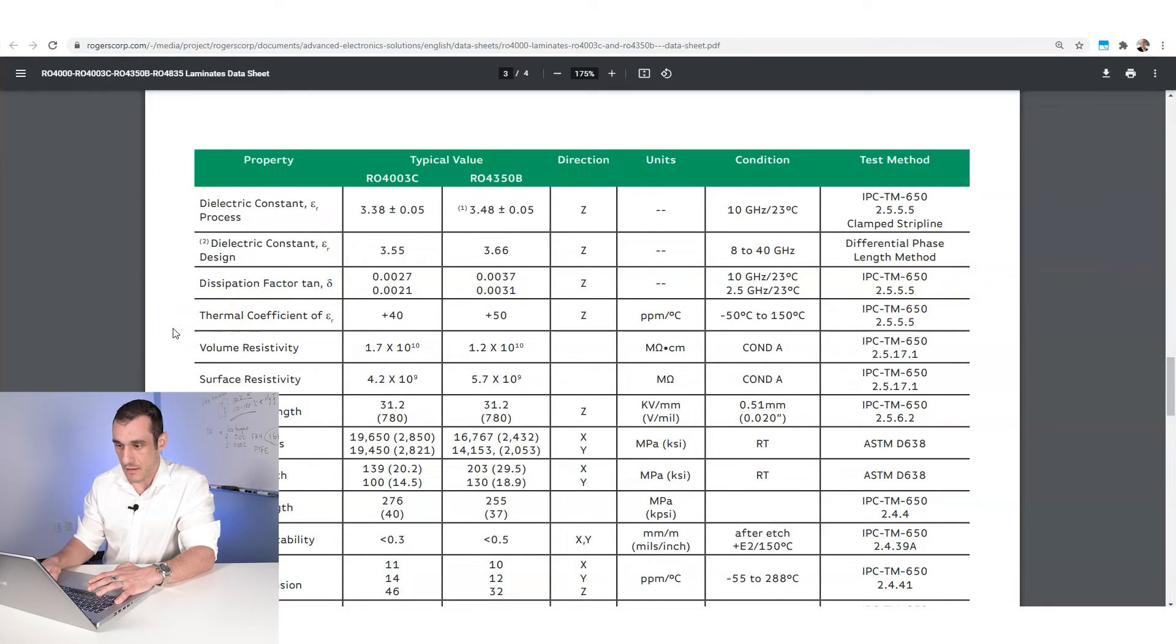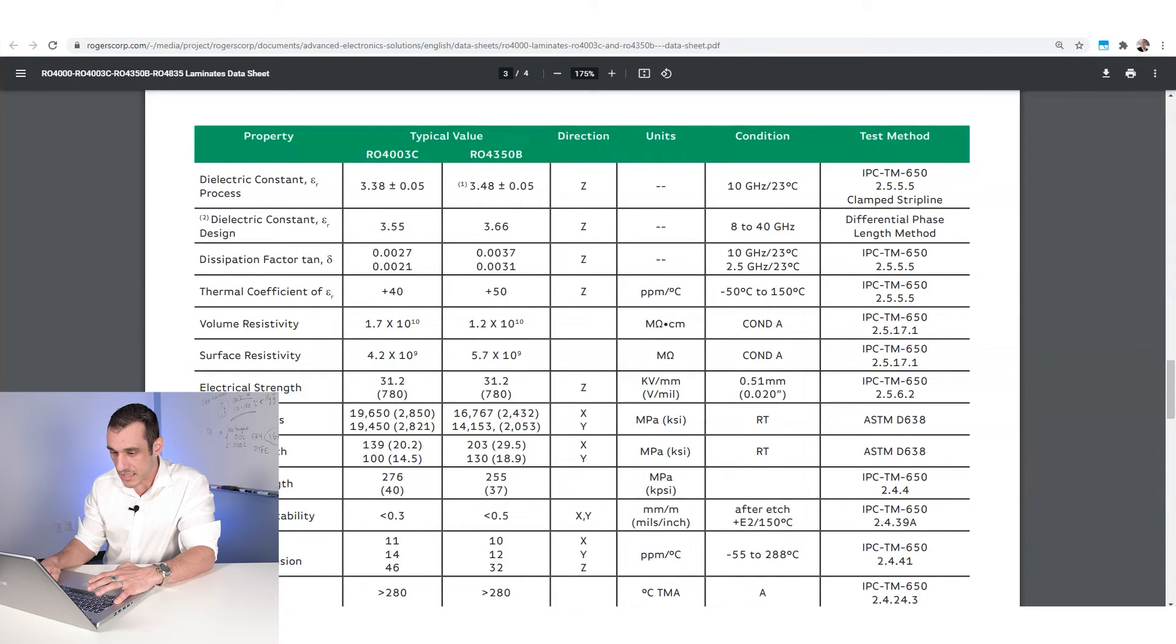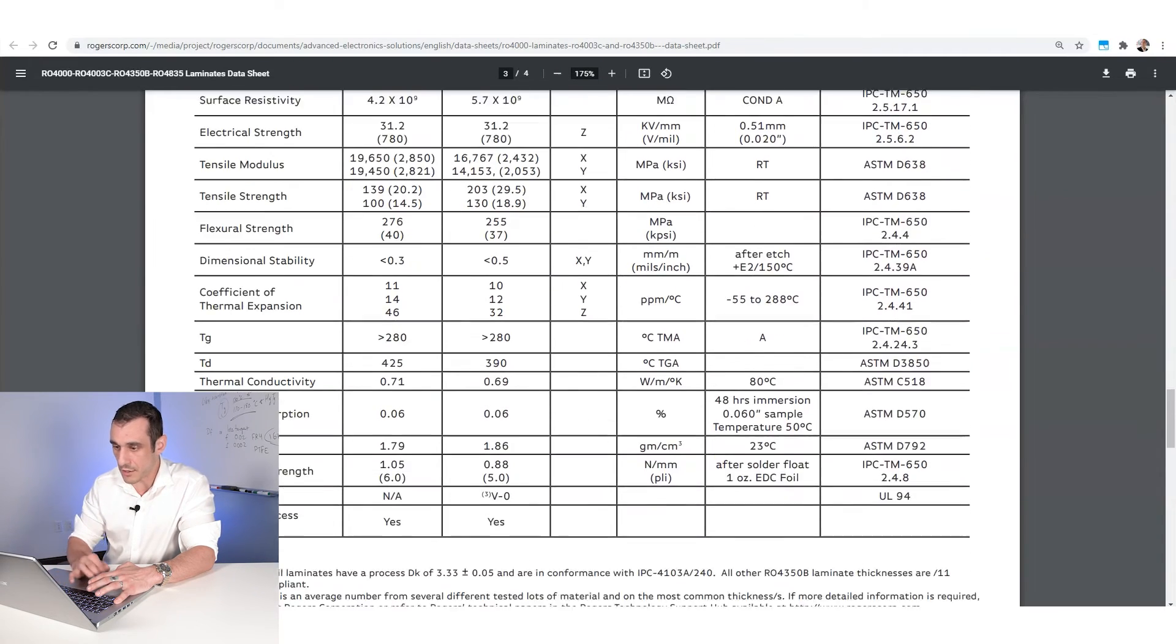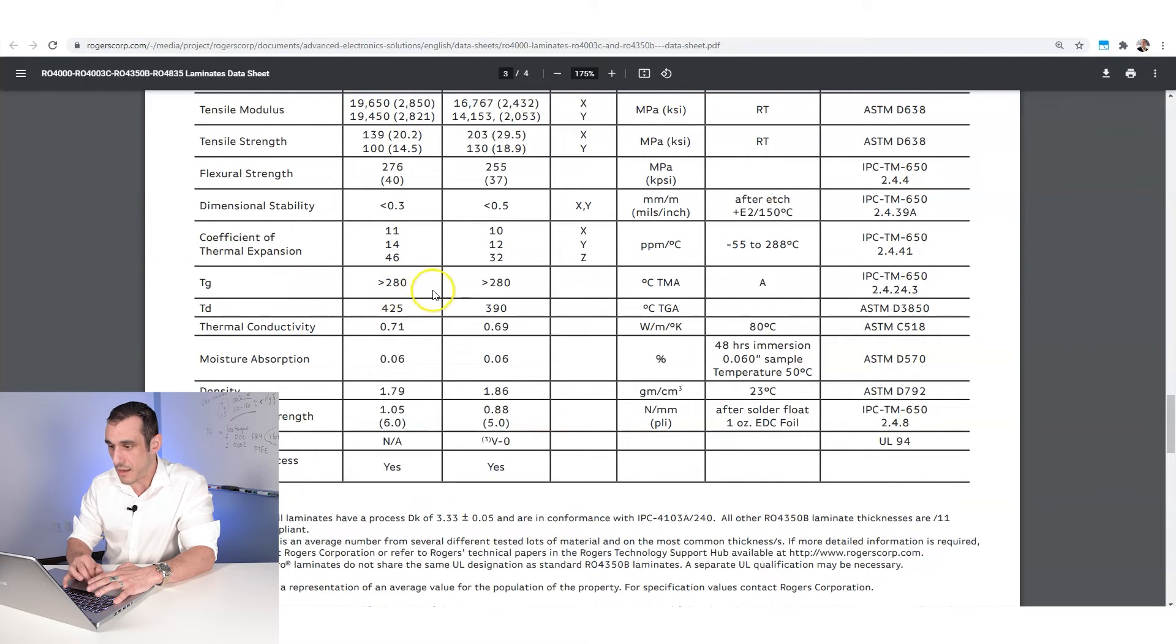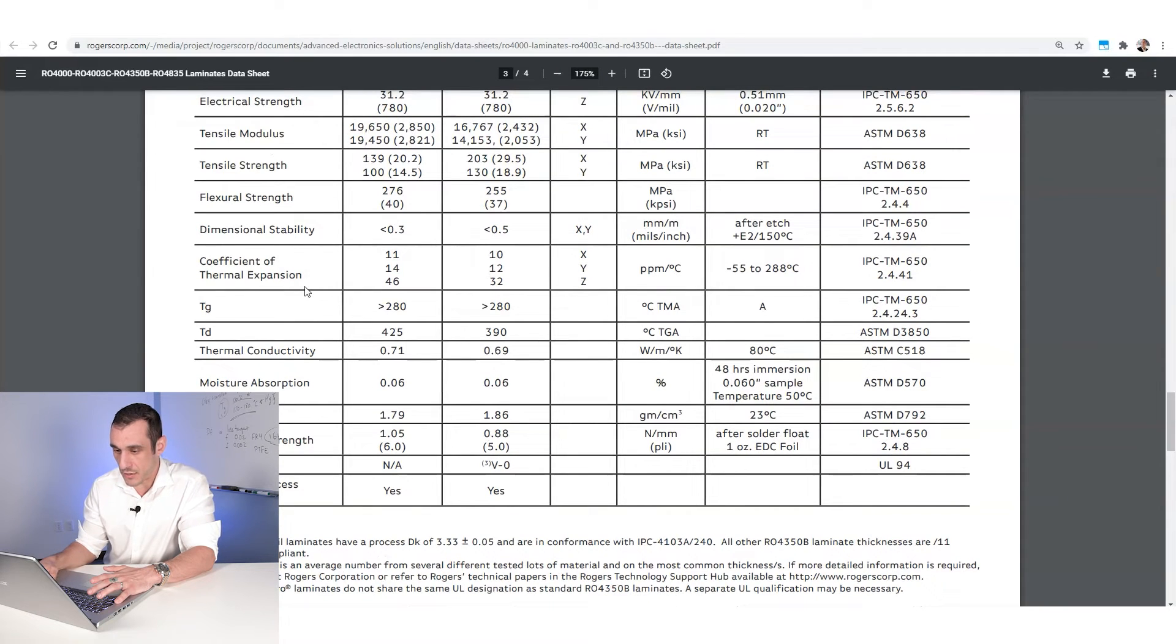Some other important points, here down at the bottom, let me scroll down here. This is the TG value. PTFE laminates have high TG values. You can see here, this value is above 280 degrees Celsius. For an FR4 grade laminate, typical fiberglass epoxy resin laminate, it's not going to be this high. So just keep that in mind. Don't be surprised if you're looking at other laminates and you see that.